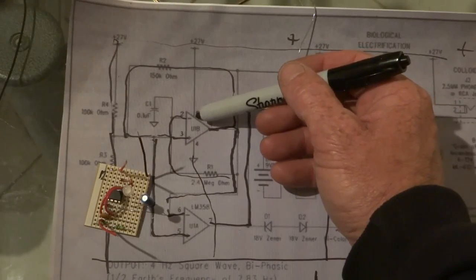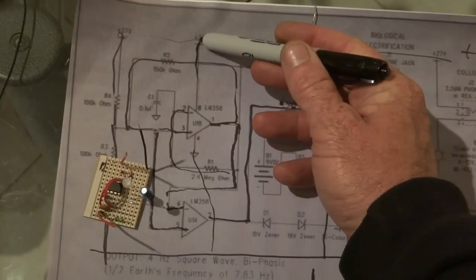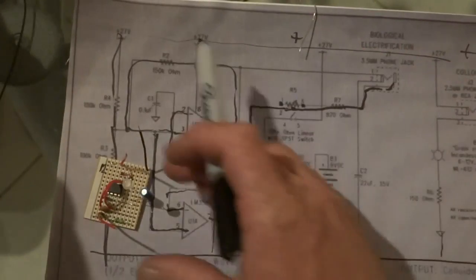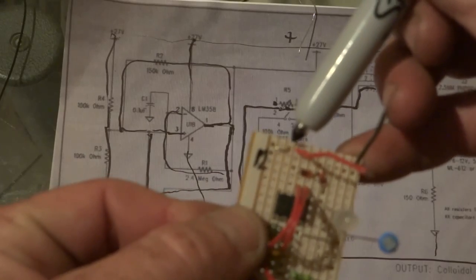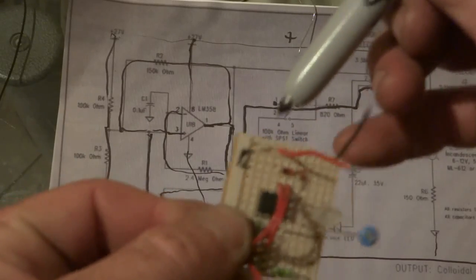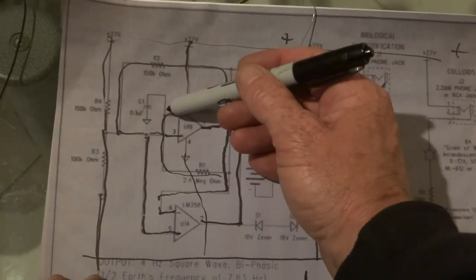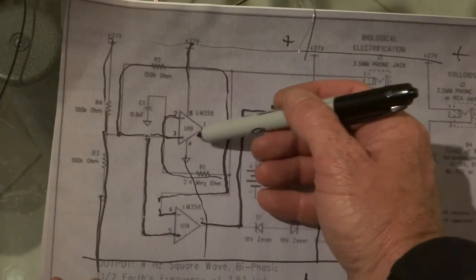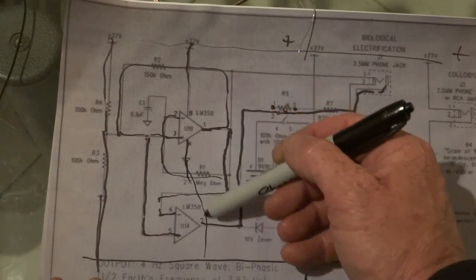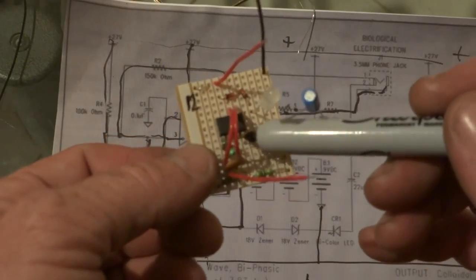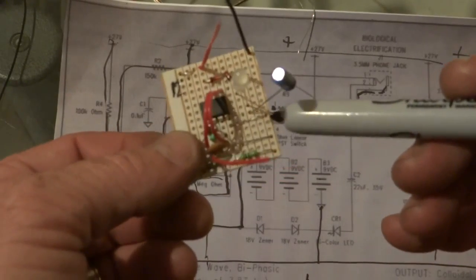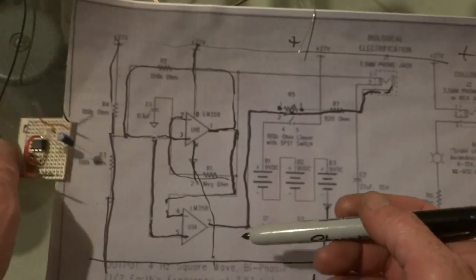This one here is number eight to the positive, which is that little pin that we did from up here, number eight to the positive. Number four was this pin here to the negative, which is that one there, number four, over to the negative. There's the two pins that we cut.